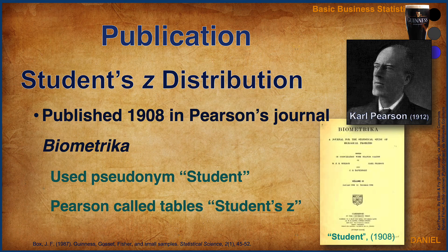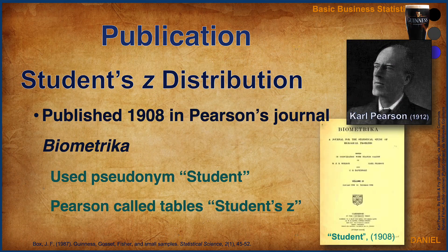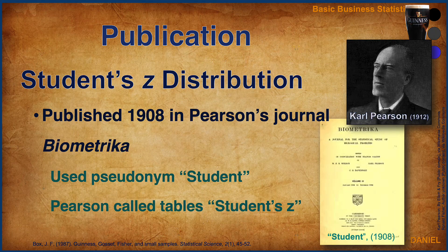However, they allowed him to publish with one stipulation. In order to avoid problems with other scientists or employees, they asked that Gossett publish anonymously. And so it was that Gossett published his tables in 1908 in the journal Biometrica, edited by Carl Pearson of Pearson's Correlation fame. In order to publish anonymously, Gossett may have considered using the pseudonym Teacher, but because that name had already been used by another researcher, Gossett chose the pseudonym Student. And Pearson called the tables Student's Z-Tables.